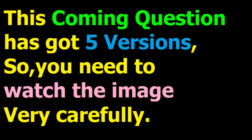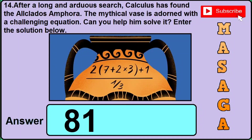Now question number 14 has got 5 different versions or types, so you need to watch the image very carefully and type the answer I have written in the answer box. For example in version 1, the image shows: 2(7 + 2 × 3) + 1 ÷ (1/3). Then the correct answer for this question would be 81, so you need to type 81 in the answer box.